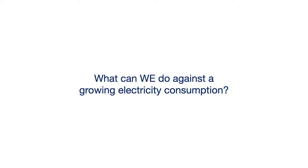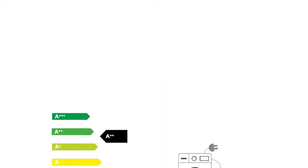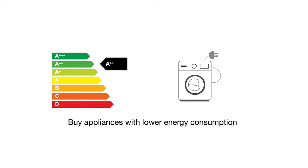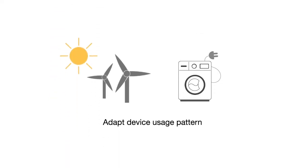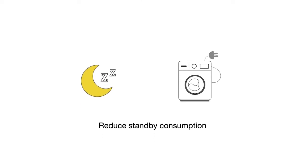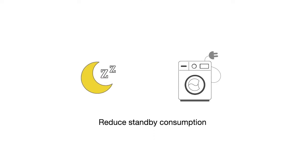So what can we do to reduce the electricity consumption? We could buy new appliances with lower energy consumption, but replacing existing and working appliances may not be sustainable at all. We could also adapt the usage patterns of the appliances, use them when clean energy by solar cells or wind turbines is available, or reduce the standby consumption by turning them off completely.